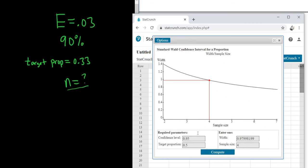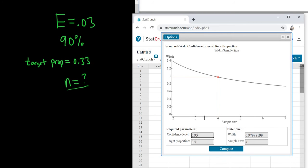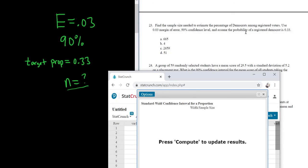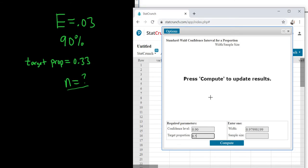And then here we enter everything. So the confidence level is 0.90. So the target proportion is what we think. We know that the probability of a registered Democrat is 0.33, so we know it's 0.33. Notice the default was 0.5. That's because if you don't have any previous knowledge, you assume there's a 50-50 chance, so you leave it at 0.5.